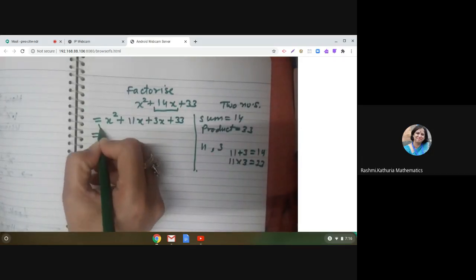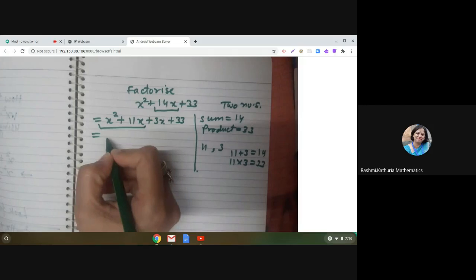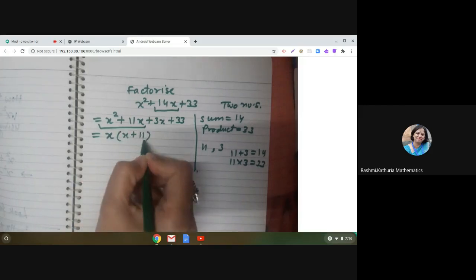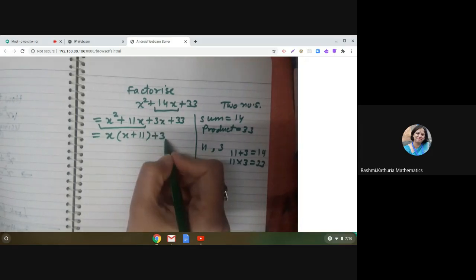This is equal to, now take common from the first two terms, x. So you get x plus 11 plus 3 is common. Yes, you get x plus 11.